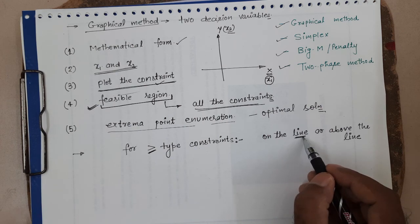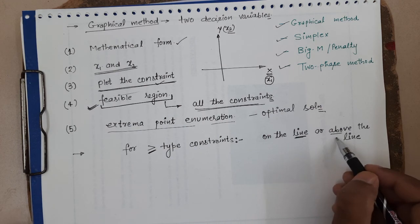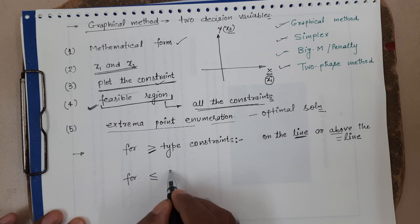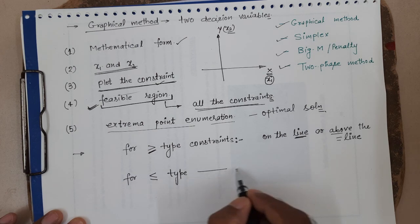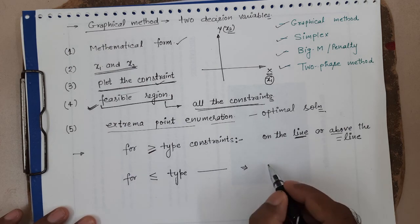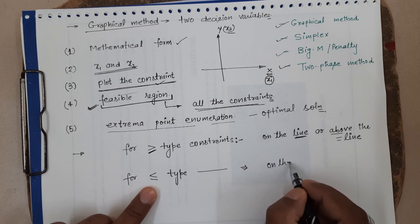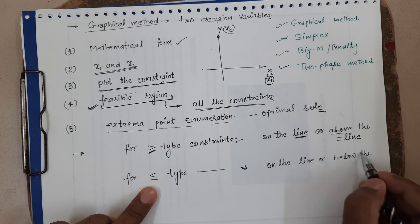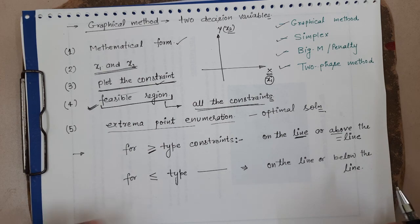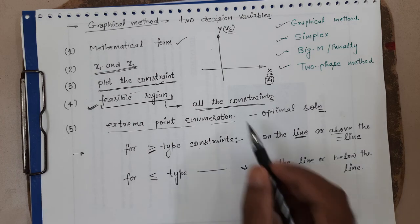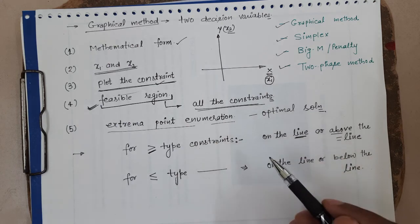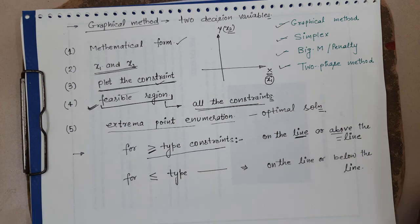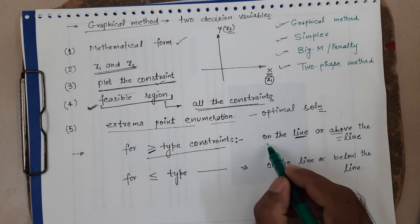So for greater-than-or-equal-to constraints, the feasible region includes the line and the region above it. If the constraints are less-than-or-equal-to type, the feasible region will be on the line or below the line. This is the normal philosophy used for plotting constraints and identifying the feasible region.